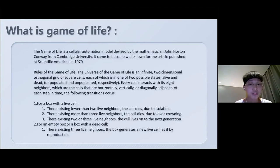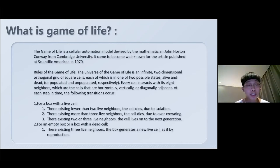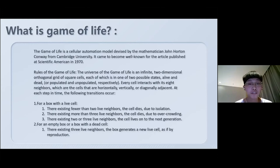Rule one: for a live cell, if there are fewer than two live neighbors, the cell dies due to isolation. If there are more than three live neighbors, the cell lives on to the next generation. Rule two: for an empty box or a dead cell, if there are exactly three live neighbors, the box generates a new live cell by reproduction. Following these four simple rules, the Game of Life generates very beautiful patterns in evolution.